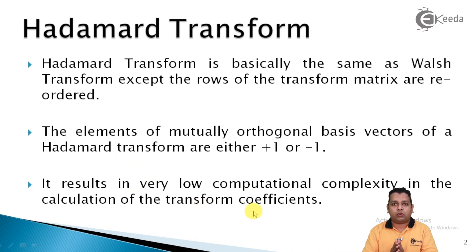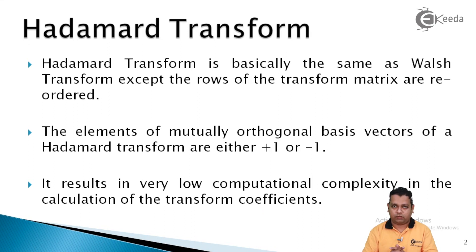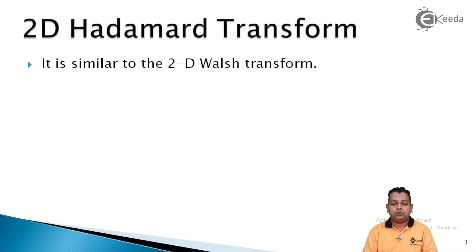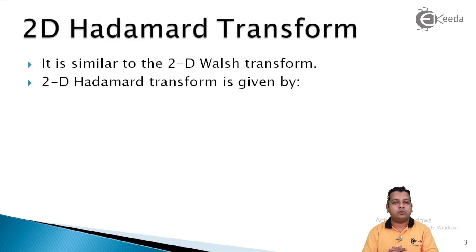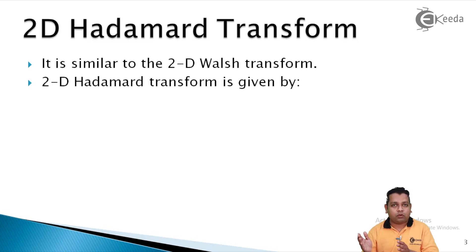This low computational complexity results from the reordering of the transformation matrix of the Walsh transform. Next, we have the two-dimensional Hadamard transform, because specifically our signal — the image sample — is a two-dimensional one. Hence we call it the 2D Hadamard transform. It is very simple, similar to the two-dimensional Walsh transform. There are two types of transformations: the direct one, which switches us from spatial domain to frequency domain, and the inverse transform, which switches back from frequency domain to spatial domain.